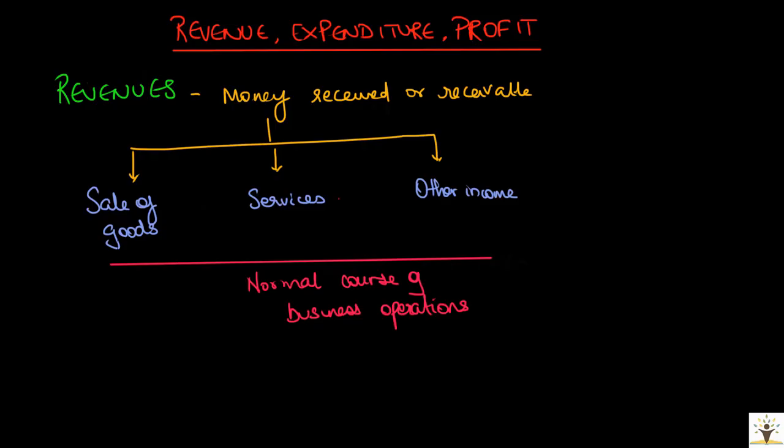Another example that cannot be classified as revenue is sale of assets. When a business is selling its non-current assets, it will receive some sum of money, but since the transaction does not fall under any of these, you cannot classify that amount received as revenues.